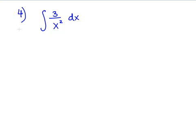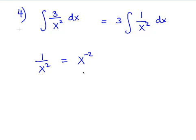So, this is our fourth example: 3 over x² dx. We can take the 3 out. And, we can have 1 over x² dx. Now, 1 over x² can be rewritten as x to the power of minus 2. So, our integral can be rewritten as 3 times x to the power of minus 2 dx.